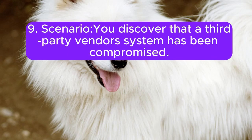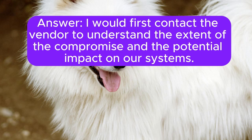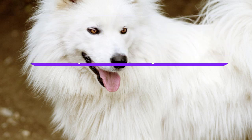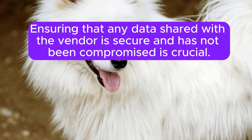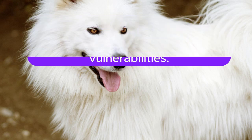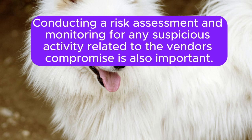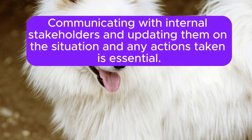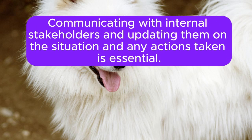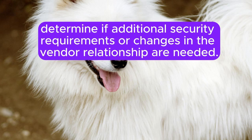Scenario 9: You discover that a third-party vendor's system has been compromised. What actions would you take? I would first contact the vendor to understand the extent of the compromise and the potential impact on our systems. Ensuring that any data shared with the vendor is secure and has not been compromised is crucial. I would then review our connection points and data flows with the vendor to identify any vulnerabilities. Implementing additional security measures, such as limiting access or using secure communication channels, can help mitigate risks. Conducting a risk assessment and monitoring for any suspicious activity related to the vendor's compromise is also important. Communicating with internal stakeholders and updating them on the situation and actions taken is essential. Finally, reassessing the vendor's security posture and their ability to protect our data would help determine if additional security requirements or changes in the vendor relationship are needed.